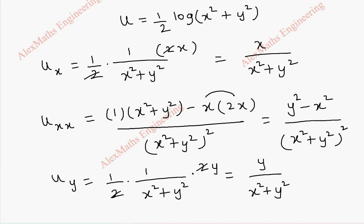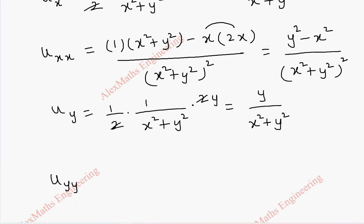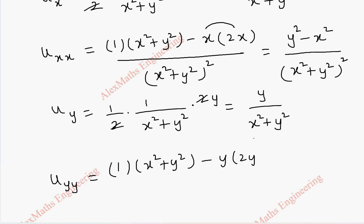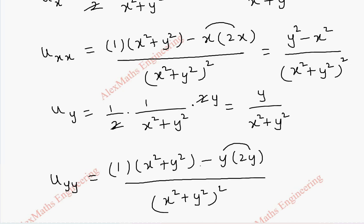Now we find uyy using the quotient rule. The derivative of the numerator is 1, and x square plus y square is kept as is, minus y into the derivative of the denominator which is 2y, whole divided by the square of the denominator. In the numerator this gives minus 2y square, and after subtraction we get minus y square. So finally uyy equals x square minus y square by x square plus y square whole square.